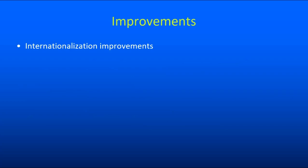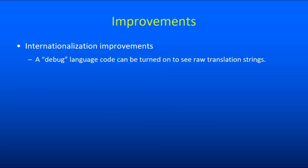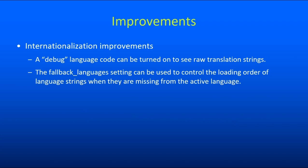There have also been some significant improvements to internationalization. There's a new language code supported called Debug. If you turn on the Debug language, you will see all of the raw translation strings and associated parameters instead of anything being translated. This could be useful if you're trying to figure out where in the language files a particular string in the interface is coming from.